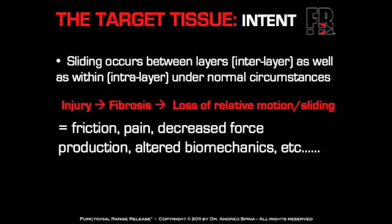Under normal circumstances, in order to have normal biomechanics, both of these types of sliding have to occur. But with injury comes fibrosis, with injury comes scar tissue — a loss of this relative sliding or relative motion. Injury can cause fibrosis between fascia superficialis and profunda, or between the levels of profunda fascia, or between the profunda fascia and the deepest fascia.